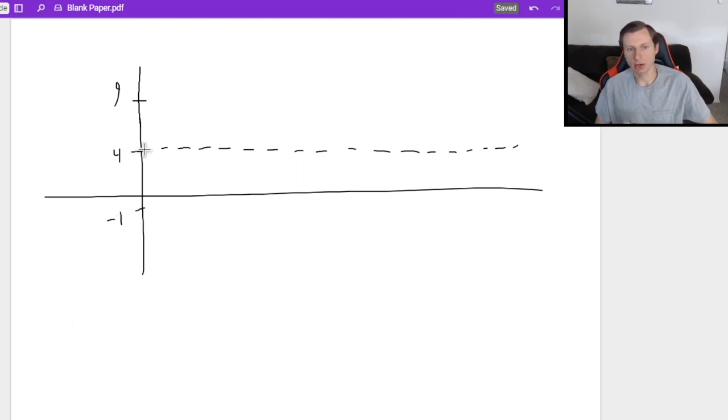So my sine curve is going to look like this. We go as low as negative one, and as high as nine. And again, it's just going to repeat this pattern over and over again. And that's the amplitude for that one.